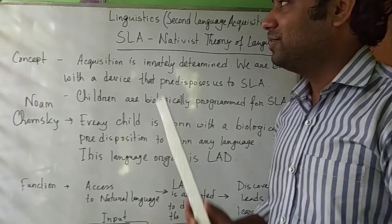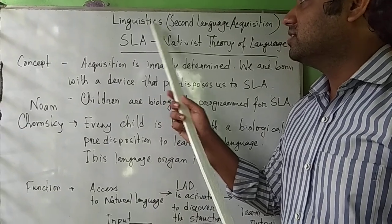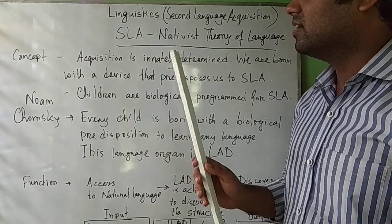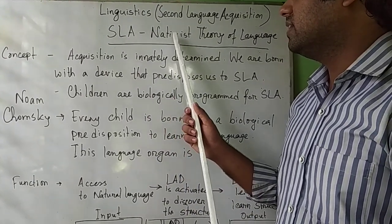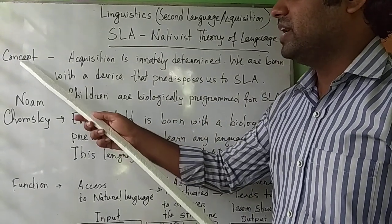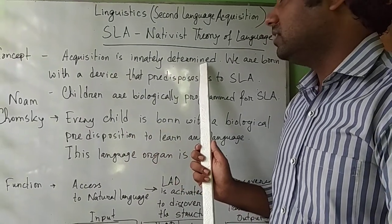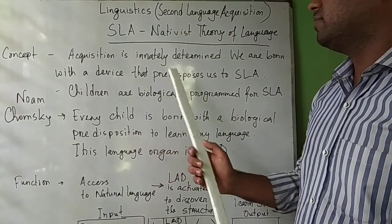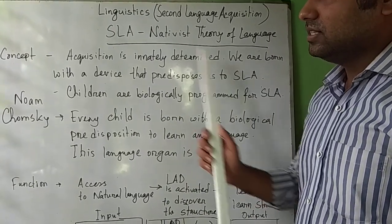Good morning everyone. Today I'm going to be talking about one part of linguistics that is very vital: Second Language Acquisition. SLA is a nativist theory of language, also called innatist theory of language. The main concept is that language acquisition is innately determined, and we are born with a device that predisposes us to language acquisition.